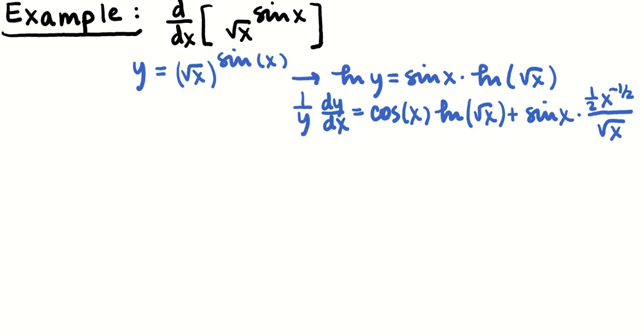And I'm going to need to simplify this. So I'm going to say 1/y dy/dx equals cos(x) log(√x) plus, that x^(-1/2) is going to go down the denominator and become a √x and combine with the √x that's already in the denominator and make an entire power of x. So I'm going to have sin(x) divided by 2 for the one half and the x for the combined square roots.